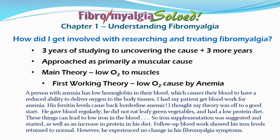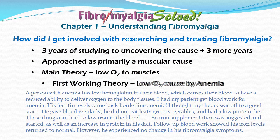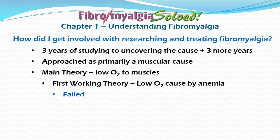Iron supplementation was suggested and started, as well as an increase in protein in his diet. Follow-up blood work showed his iron levels returned to normal. However, he experienced no change in his fibromyalgia symptoms. Therefore, I went back to the drawing board. What else could be the cause of his chronic muscle spasms?